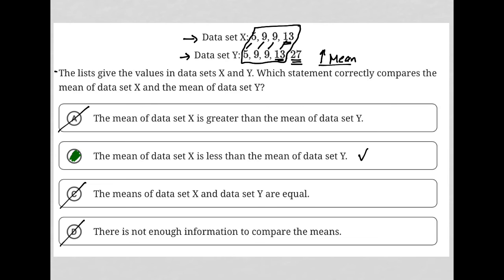If you're not certain based on the logical approach, you could just find the means by calculation. We add all the values together and divide by the number of values, which is 5 for data set X. Then compare that to the same values plus 27, all divided by 6 for data set Y.